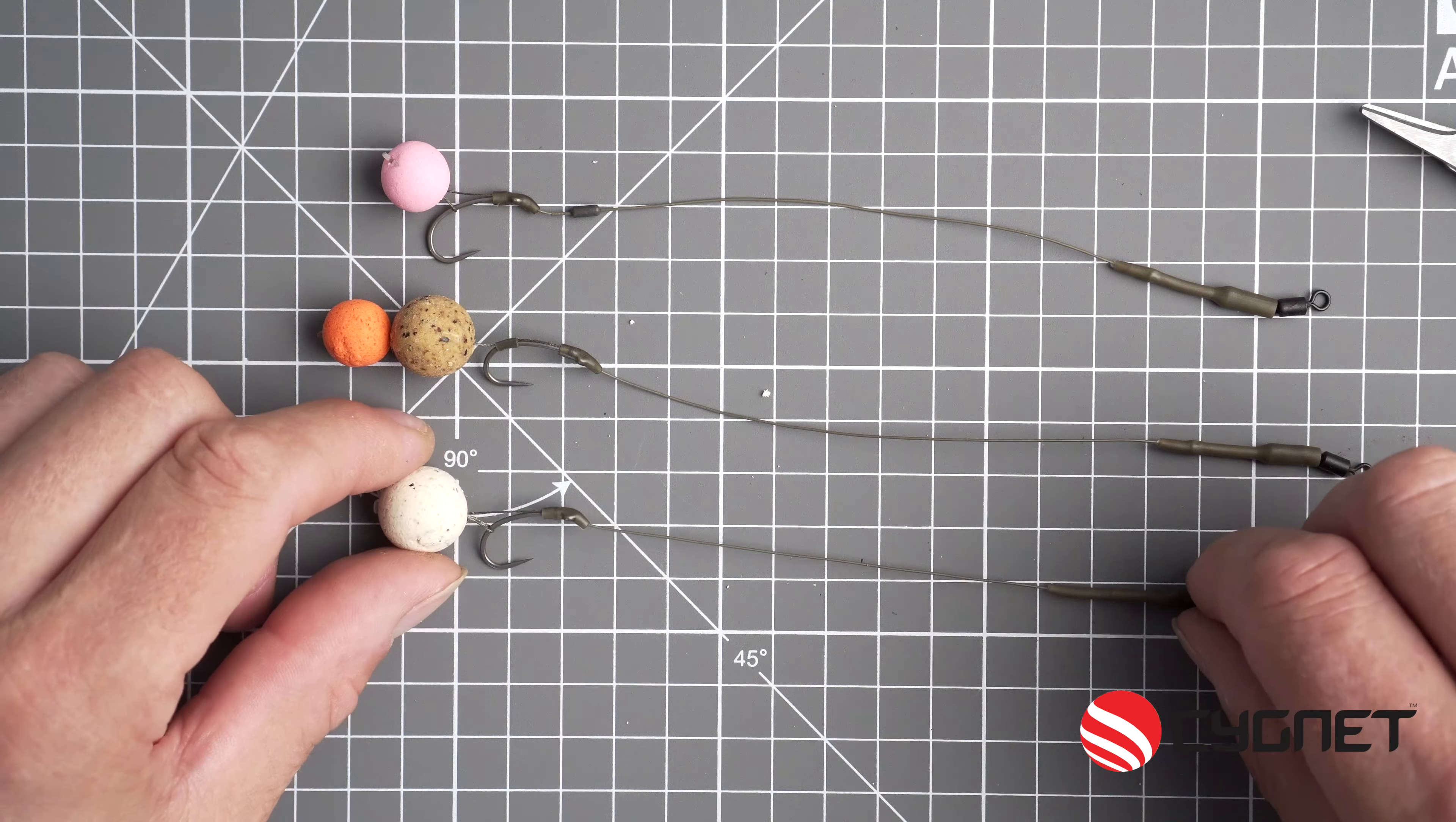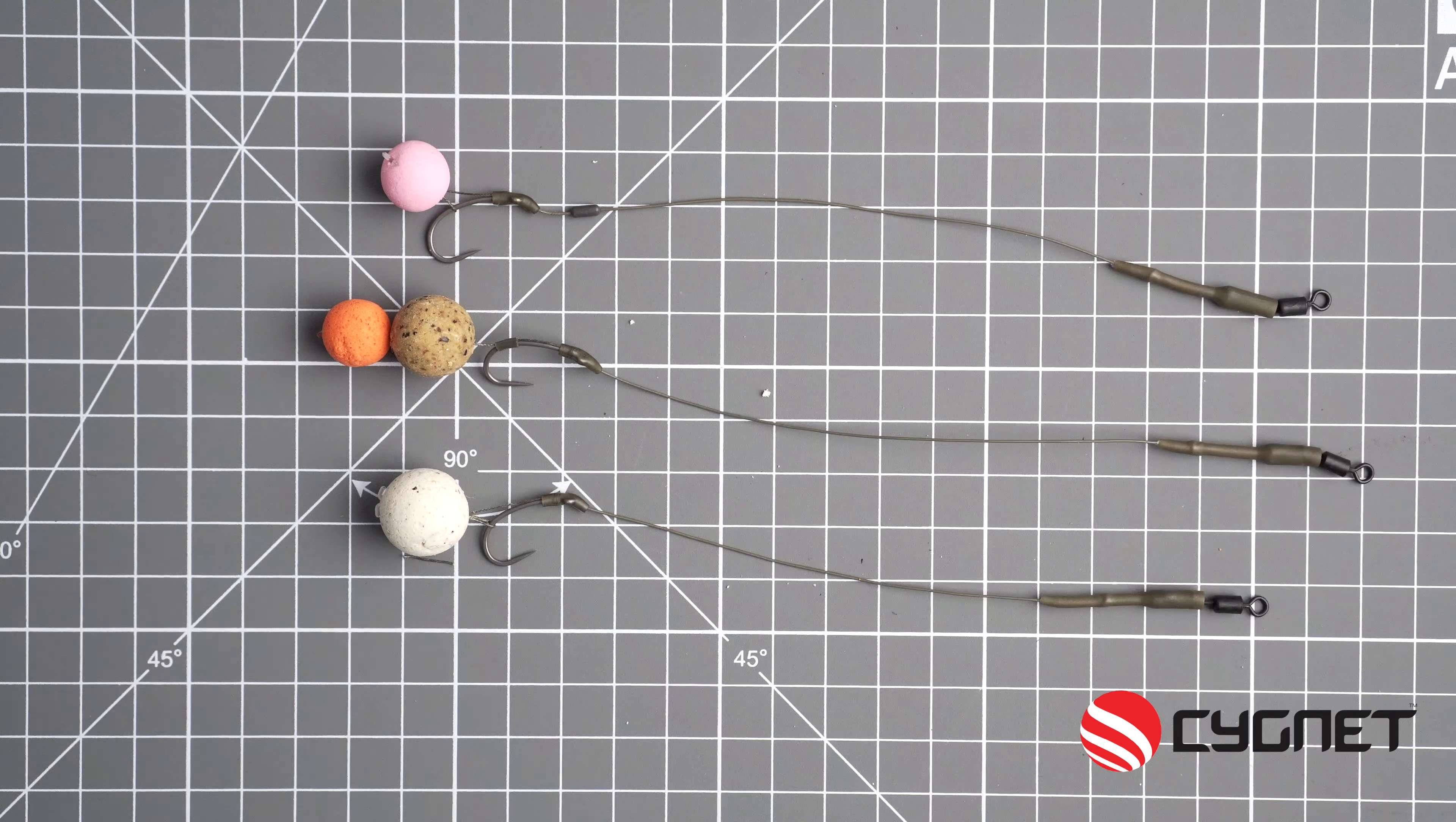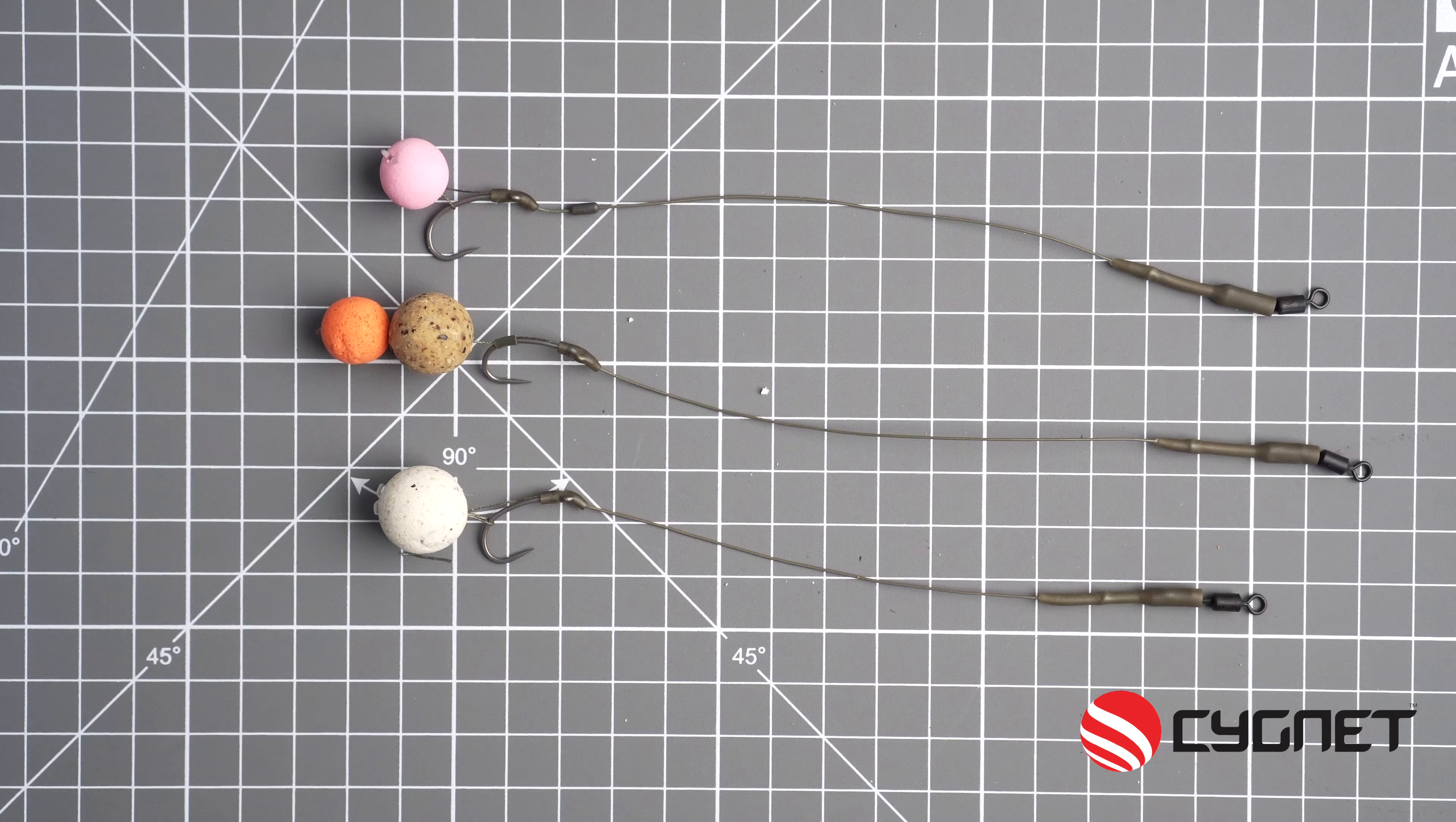So there you go, from the top you have a pop-up rig, a snowman rig, and a wafter rig.